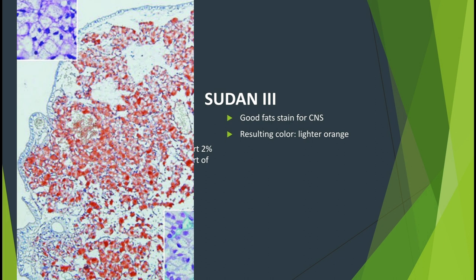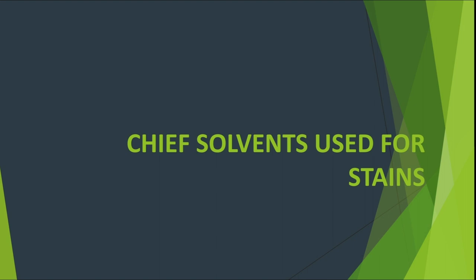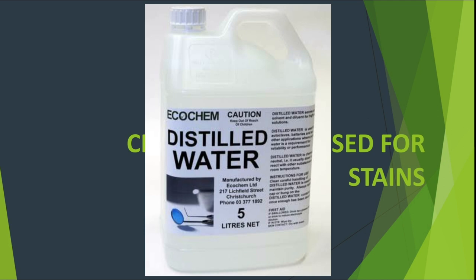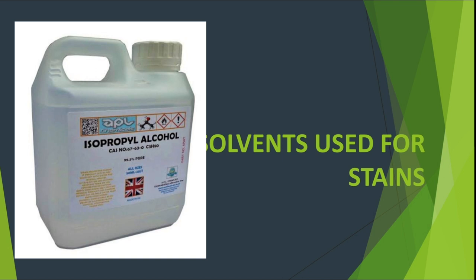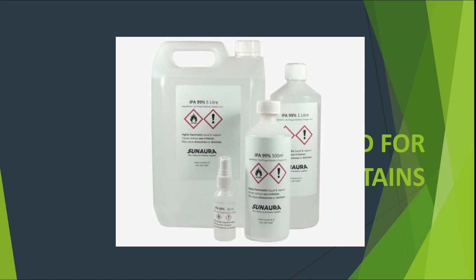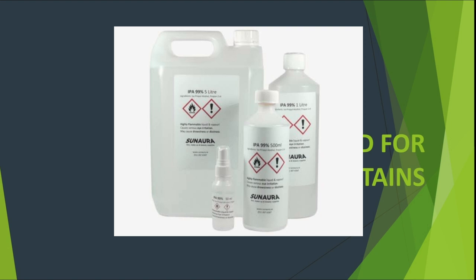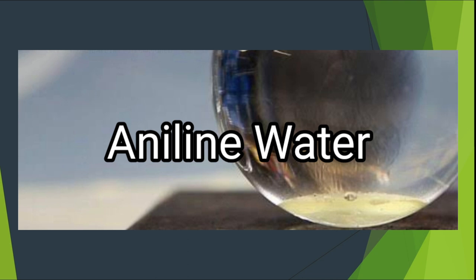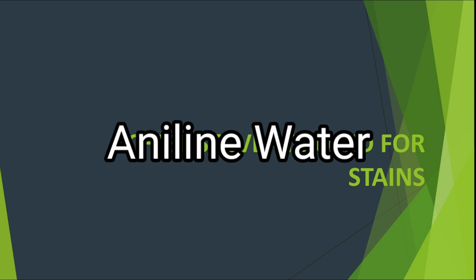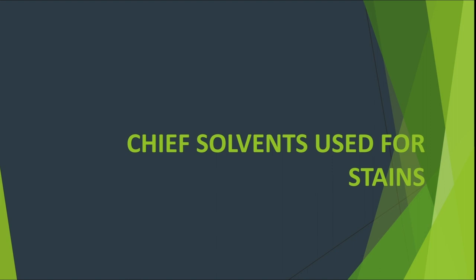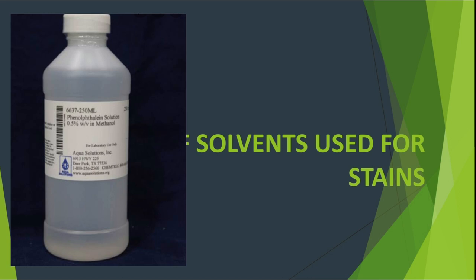The chief solvents used for stains include water, which should always be distilled unless otherwise stated; alcohol, that is ethyl alcohol in various concentrations; methyl alcohol, which is usually absolute and is especially indicated in the preparation of blood stains and should be acetone-free; aniline water, which is 10 ml of aniline added to every half to one liter of hot distilled water, shaken, cooled, and filtered before use; and phenol in aqueous solution of 0.5 to 5%.